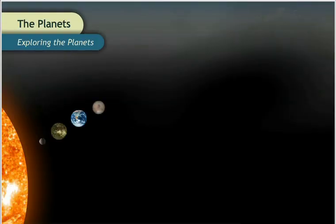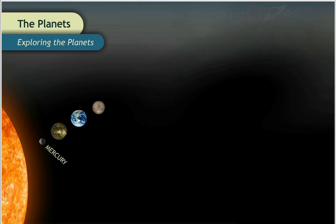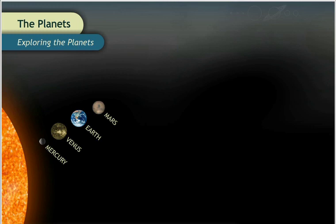The first four planets in the solar system, Mercury, Venus, Earth, and Mars, are called the inner planets.